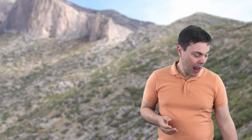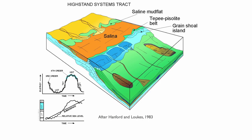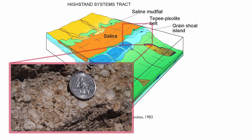We've seen what happens in the lagoon. At the edge of that system, we can typically find grain shoals and tipi-pizzolite belts.